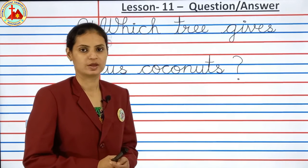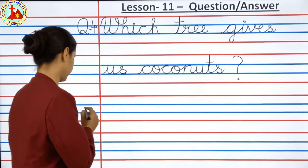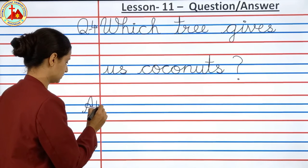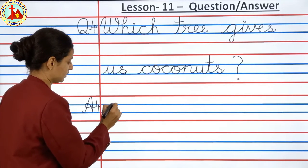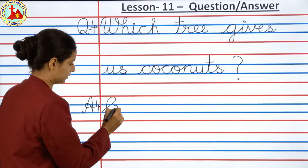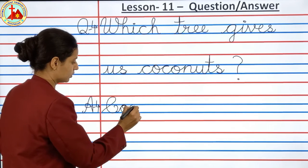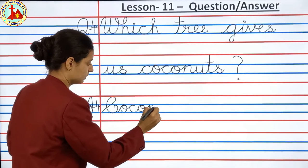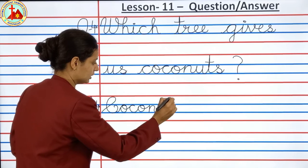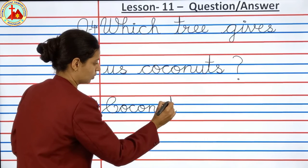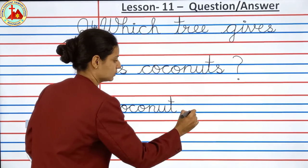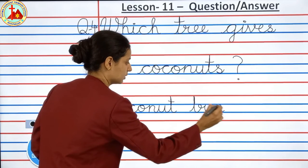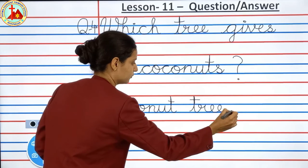Answer number 4 is coconut tree. Write answer 4. First letter cursive capital: C, O, C, O, N, U, T. Coconut. T, R, E, E. Tree. Full stop. Coconut tree.